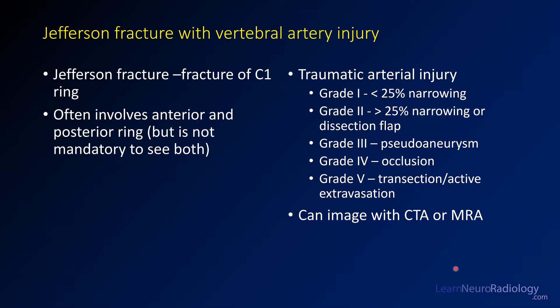This is a Jefferson fracture with an associated vertebral artery injury. A Jefferson fracture is the eponymous name for a fracture through the ring of C1. It frequently involves both the anterior and posterior ring, but that is not mandatory. When you have arterial injuries associated with trauma, there is a grading scale typically known as the Denver grading scale.